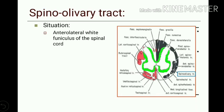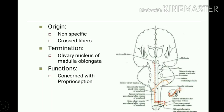The spinoolivary tract has fibers located in the anterolateral white funiculus of the spinal cord. The origin of these fibers is non-specific, and the fibers are crossed. These fibers terminate in the olivary nucleus in the medulla oblongata. The function of this tract is concerned with proprioception.